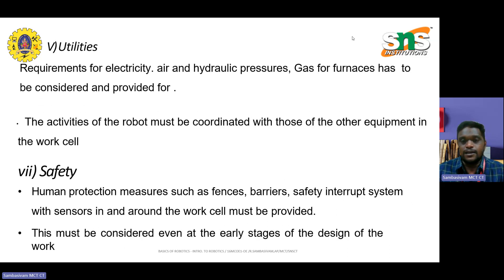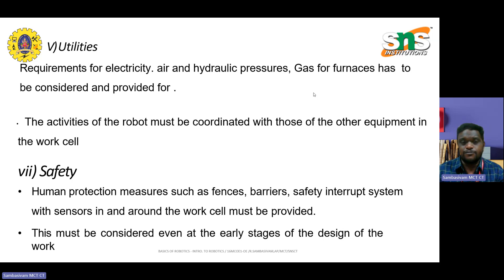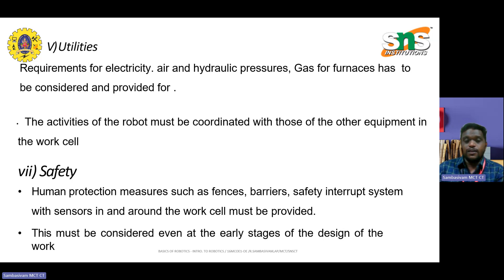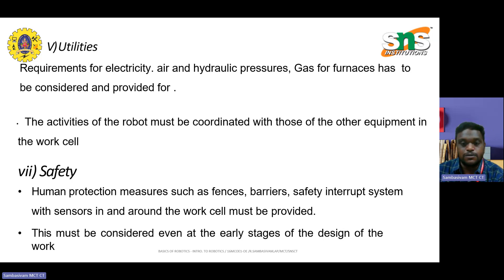Regarding utilities: requirements for electricity, air, hydraulic pressures, or gases for furnaces have to be considered when providing utilities. The activities of the robot must be coordinated with those of the other equipment in the work cell layout. Apart from that, regarding human safety: human protection measures such as fences, barriers, and safety-interrupt systems with sensors in and around the work cell must be provided.